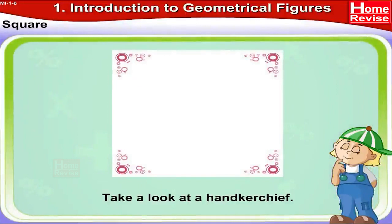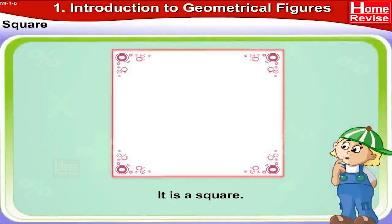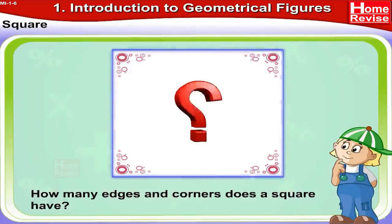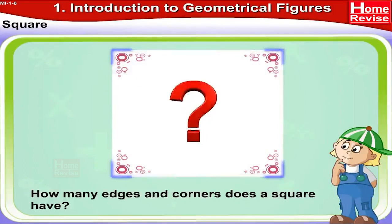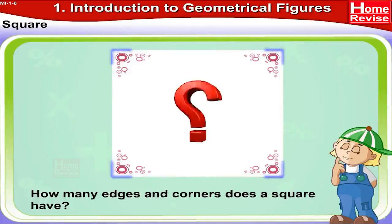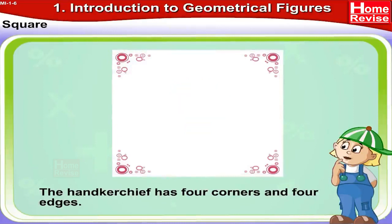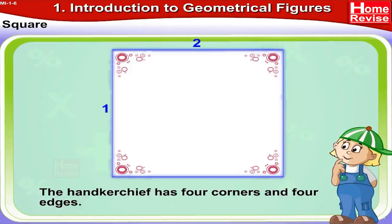Alright — square. Take a look at a handkerchief; it is a square. How many edges and corners does the square have? Let us find out. The handkerchief has four corners and four edges.